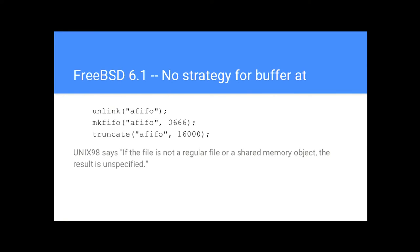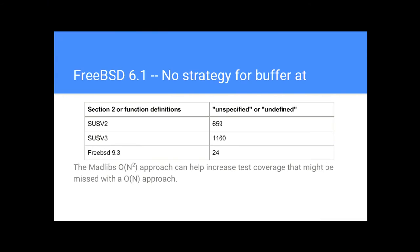I actually dove deeper into the 'unspecified' category of function specs. Looking at two versions of the Single UNIX Specification, the number of unspecified behaviors has doubled between those two standards. My mad-lib approach isn't going to test that those undocumented things work correctly, but it will test that those calls don't panic the kernel. That's potentially 1,200 panic points the computer can check — that's my hand-wave argument for the benefit of the mad-lib approach.